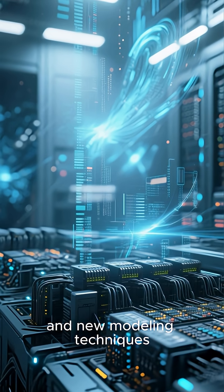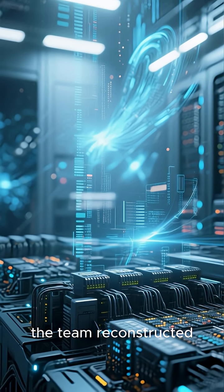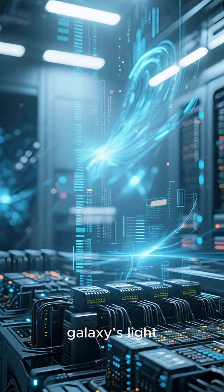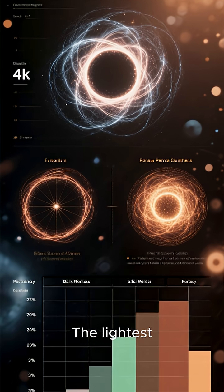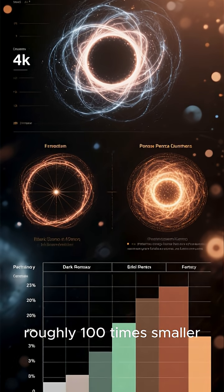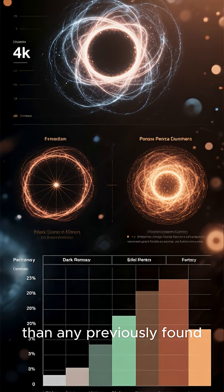Using supercomputers and new modeling techniques, the team reconstructed how this unseen object warps the background galaxy's light. The result? The lightest dark matter halo ever detected, roughly 100 times smaller than any previously found.